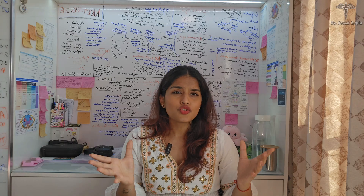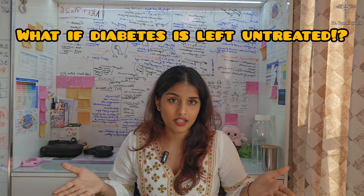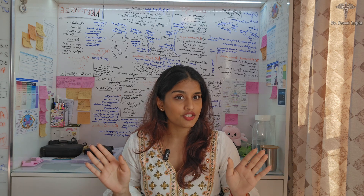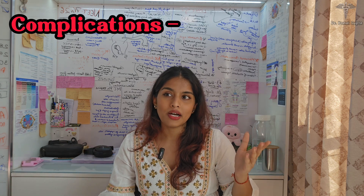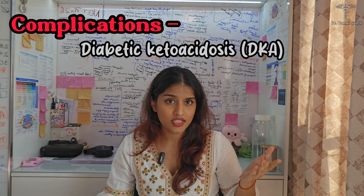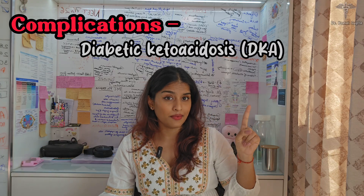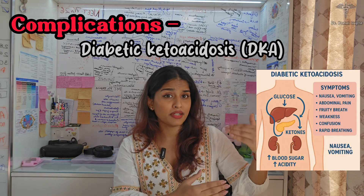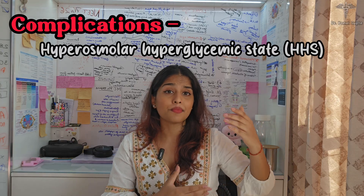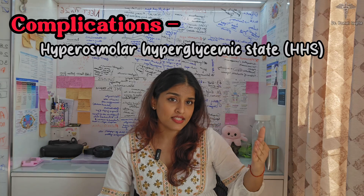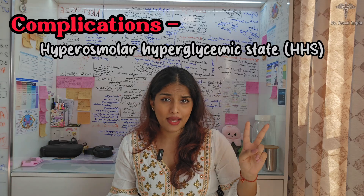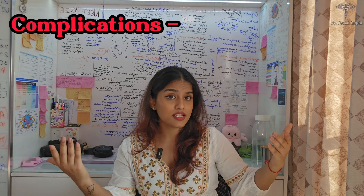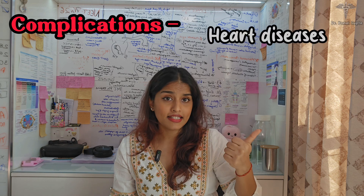What happens if diabetes is left untreated? There are serious short-term and long-term complications. Untreated diabetes can lead to diabetic ketoacidosis, mainly seen in Type 1, where the body breaks down fat, leading to acid build-up that can be life-threatening. There is also hyperosmolar hyperglycemic state, or HHS, mainly seen in Type 2 — high sugar but without the ketones.